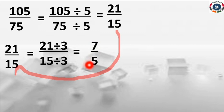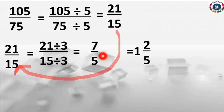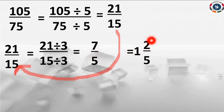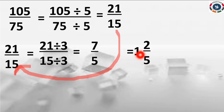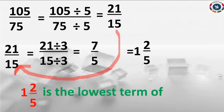This is also an improper fraction, so we convert it into a mixed fraction. How many times does 5 go into 7? Only 1 time. Write 1 as the quotient. Subtract 5 from 7 to get remainder 2. Write the fractional part with the same denominator. So the answer is 1 and 2/5. This is the lowest term of 105 by 75.